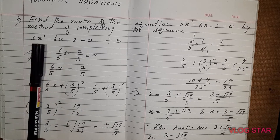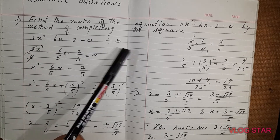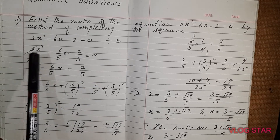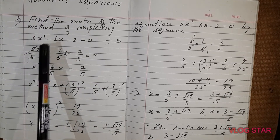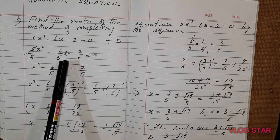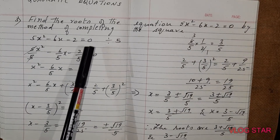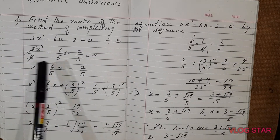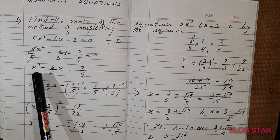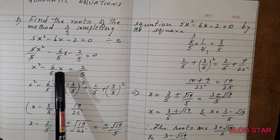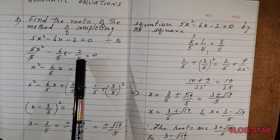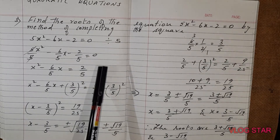The coefficient of x² is 5, so divide the whole equation by 5. So (5/5)x² - (6/5)x - 2/5 = 0. Here we can cancel 5 and 5, so what is remaining is x² - (6/5)x - 2/5.